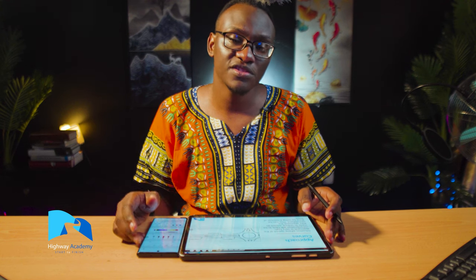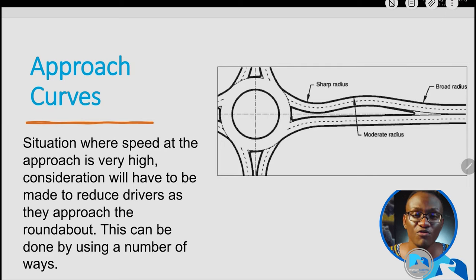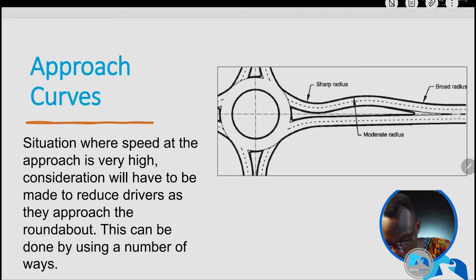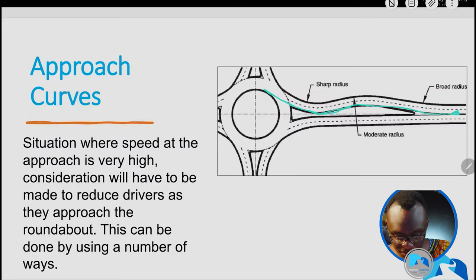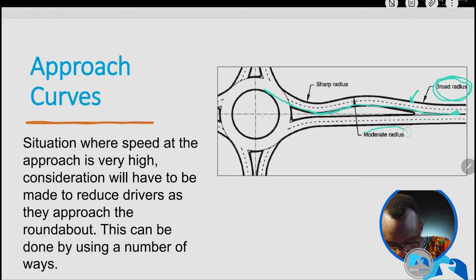In those situations, you need to create a form of treatment at the approach curves. One option is to create a reverse curve: the road curves, reverses, and then deflects into the roundabout. This helps slow vehicles — you start with a much broader radius, transition to a moderate radius, and finish with a very sharp radius, creating a safer design.